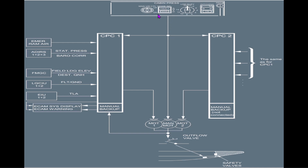Wenn der Mode Selector auf manuell steht, wird automatisch der manuelle Motor in Betrieb genommen. Es gibt auch ein Manual Backup – eine extra Stromversorgung – falls der Carbon Pressure Controller ausfällt. Sodass immer irgendwie ein Backup-System vorhanden ist.